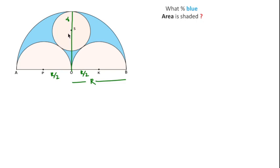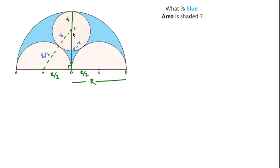Now if we connect P to S, this becomes a right angle triangle POS, because this is perpendicular. Then what will be the length of PS? Since P to this point is the radius for this semicircle, which is R over 2, plus small r. And the length of OS: since O to this point is the radius for the bigger semicircle, that is R, minus small r. So R minus small r gives us OS.